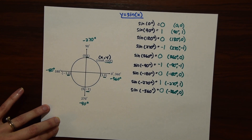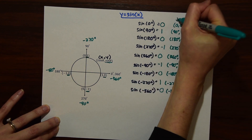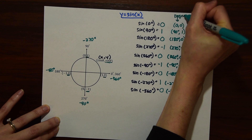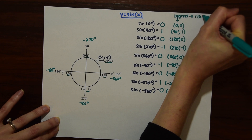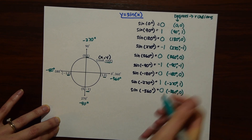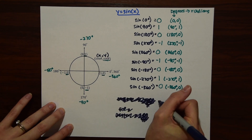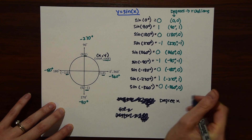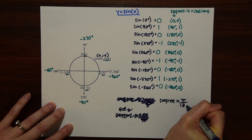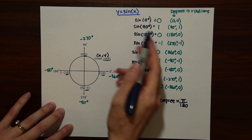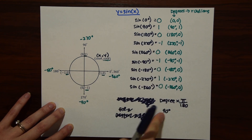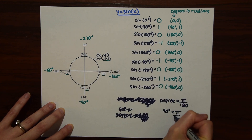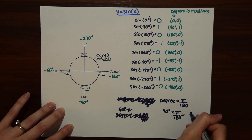Before we can start plotting our points, we need to convert all our degrees to radians. To do that we follow this simple formula: we take the degree value and multiply it times pi over 180. For example, if we wanted to convert 90 degrees to radians, we do 90 times pi over 180, which gives us 90pi over 180 or pi over 2.